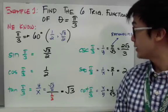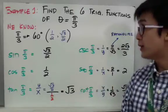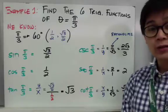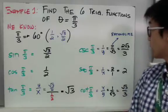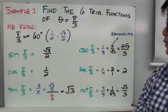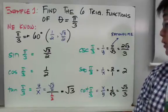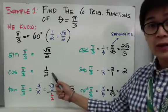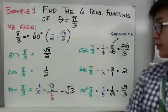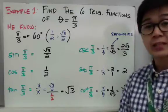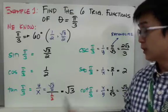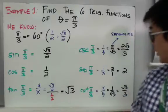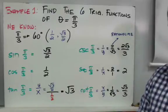For the inverse trig ratios: cosecant π/3 is the reciprocal of square root of 3 over 2, which is 2 over square root of 3. After rationalizing, the final answer is 2 square root of 3 over 3. Secant π/3 is the reciprocal of 1/2, which equals 2. Cotangent π/3 is the reciprocal of square root of 3, which is 1 over square root of 3. After rationalizing, the final answer is square root of 3 over 3.